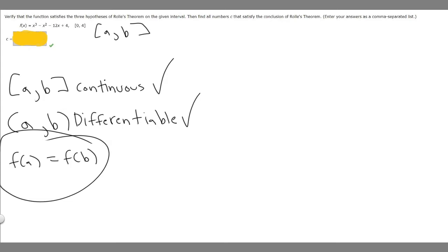What about is f(a) equal to f(b)? Well, we can test that. So a is 0 and b is 4. Let's test those. If we plug in 0, we get f(0) = 0³ - 0² - 12(0) + 4. So it's basically just 0 - 0 - 0 + 4, so it equals 4.